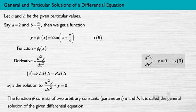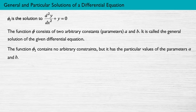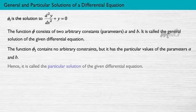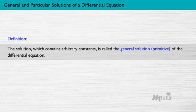The function φ consists of two arbitrary constants A and B, and it is called the general solution of the given differential equation. The function φ₁ contains no arbitrary constants but has particular values of the parameters A and B. Hence, it is called the particular solution of the given differential equation. Thus, the solution which contains arbitrary constants is called the general solution, or primitive, of the differential equation.